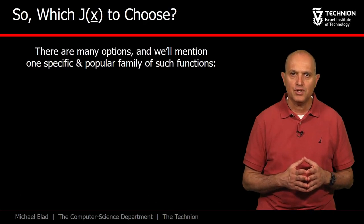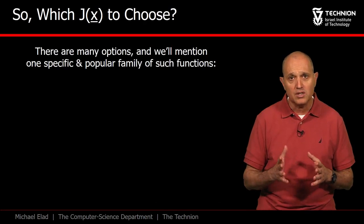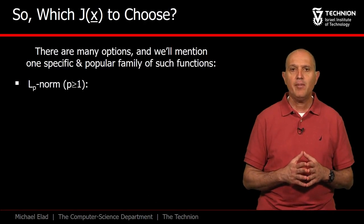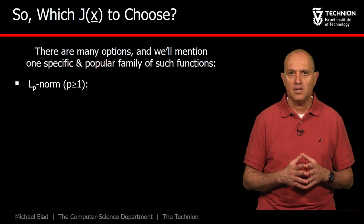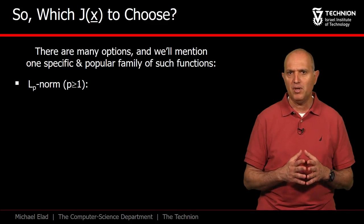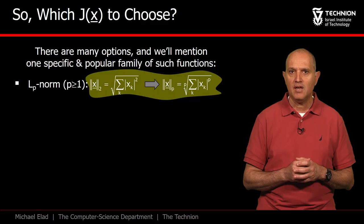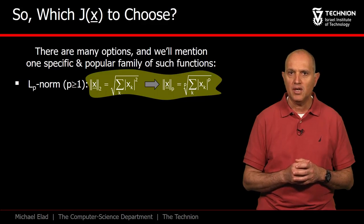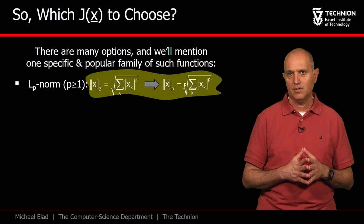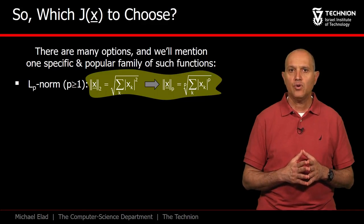Armed with this knowledge, we can seek regularization expressions that are convex or even strictly so. A specific family of functions that we will be interested in is the Lp norm, for p being 1 and above. This is the expression, and as can be seen, the L2 norm is obtained as a special case for p equals 2. All this family leads to convex functions.